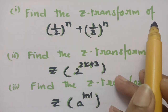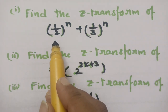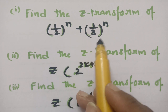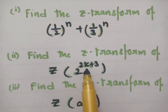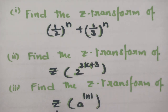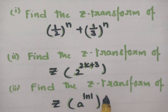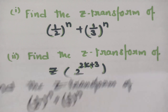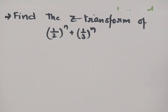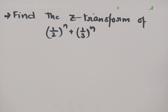Using this definition I am going to solve these three important, repeatedly asked questions. First, find the Z transform of (1/2)^n + (1/3)^n. Second, find the Z transform of 2^(2k+3). Third, find the Z transform of a^|n|.